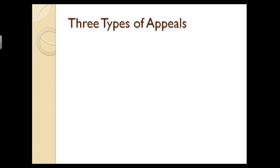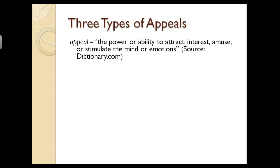In terms of persuasive communication, there are three types of appeals. An appeal, using the dictionary.com definition, is the power or ability to attract, interest, amuse, or stimulate the mind or emotions. I like this definition because it focuses on either the mind or emotions, and it uses multiple verbs — attract, interest, amuse, or stimulate — really getting at the full sense of an appeal: that it draws us to something or peaks something in us that makes us want to know more.